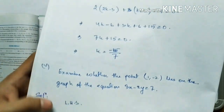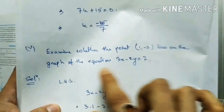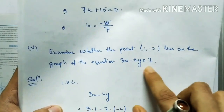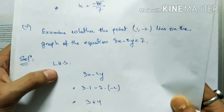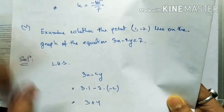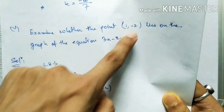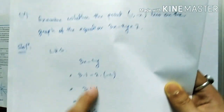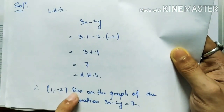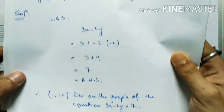To examine whether a point lies on the graph of an equation, take the LHS and substitute the values of x and y. If LHS equals RHS, then the point lies on the graph of the equation.